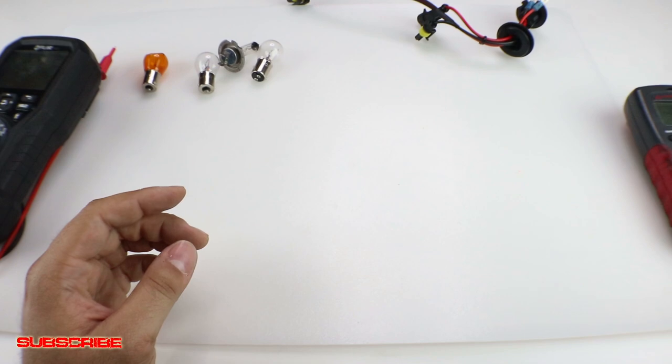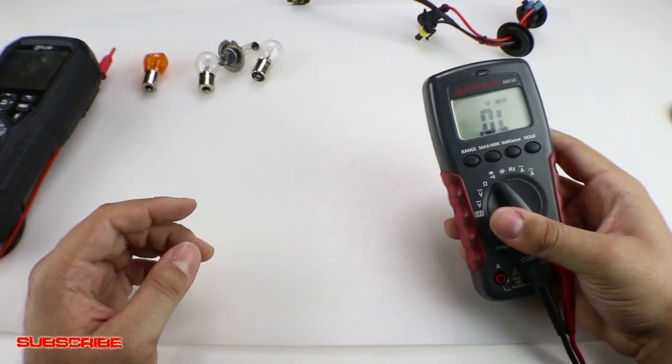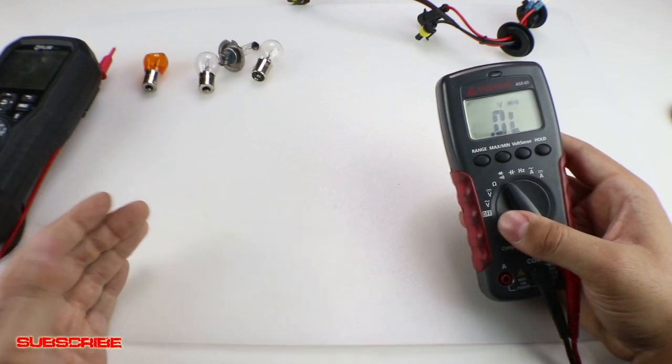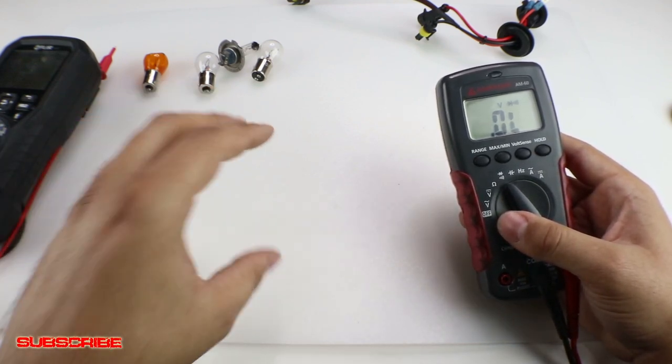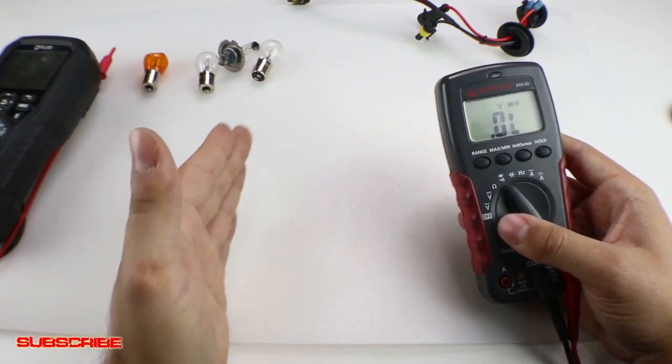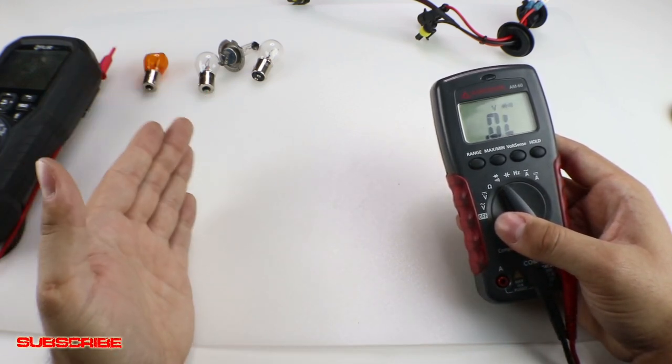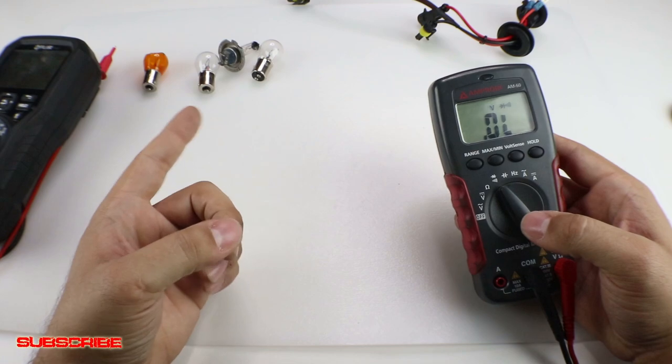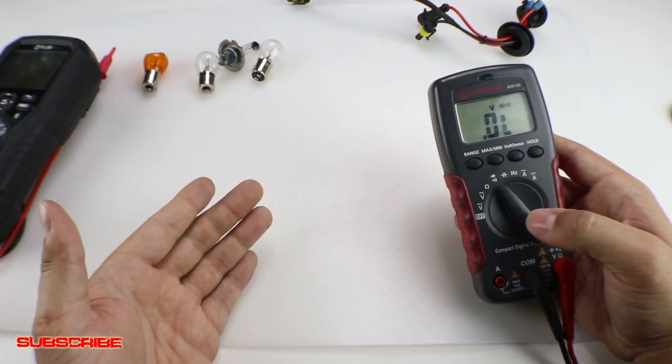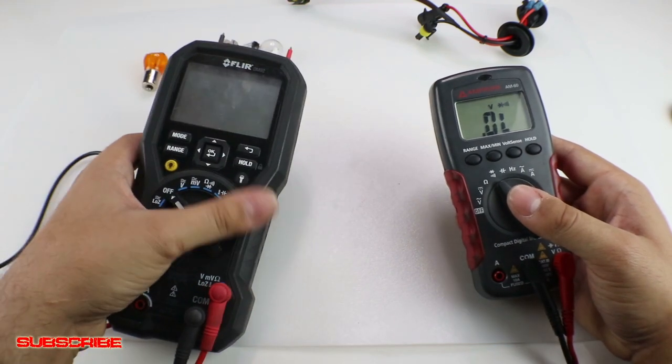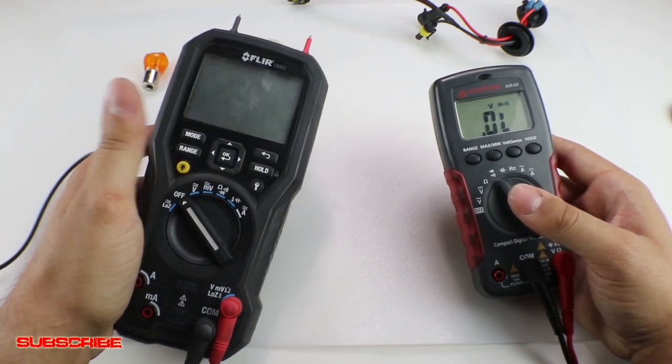Now if you're looking for a budget voltmeter or DVOM, I actually have links in the description that will show you exactly where you can pick up different ranges, different price ranges, of pretty good voltmeters or multimeters that you can use to test resistance, voltage, continuity, which is the one that we're using today, and a bunch of other ones.